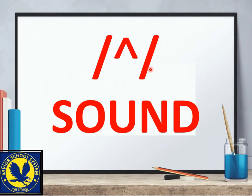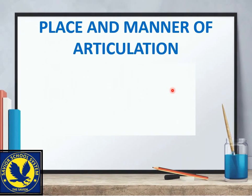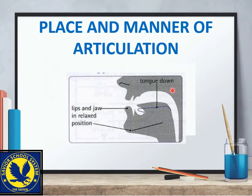Next is the ʌ sound. This is a little different from both the previous sounds. جو پہلی دو sounds ہم نے بتائیں وہ ملتی جلتی ہیں — یہ تھوڑی سی فرق ہے۔ اس میں place and manner of articulation بھی فرق ہے: lips and jaw are in a relaxed position، اور زبان پیچھے سے نہیں اٹھائی جاتی — the tongue is not in the raised position, it is almost flat۔